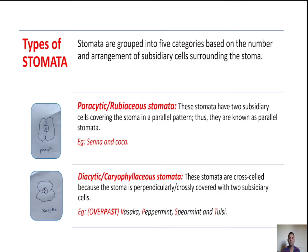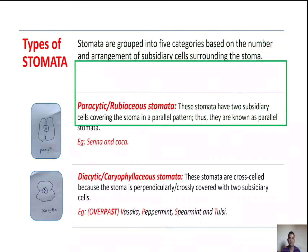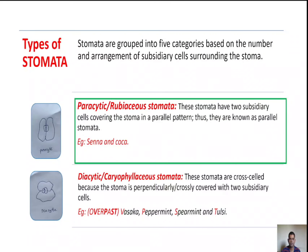Next, types of stomata. Stomata are grouped into five categories based on their number and arrangement of subsidiary cells around the stoma. The first one is parasitic, which is also known as rubiaceous type of stomata, because they were first identified in the Rubiaceae family.